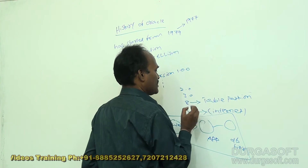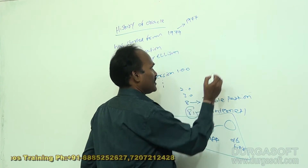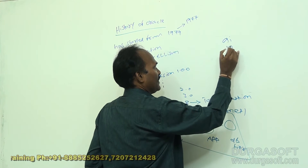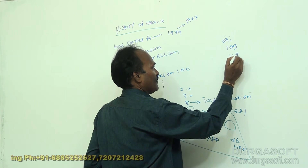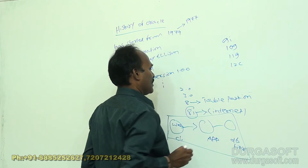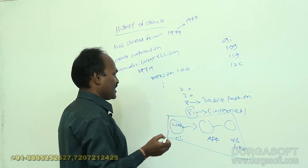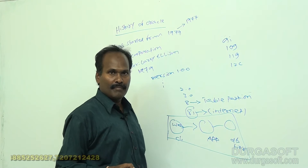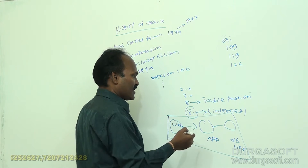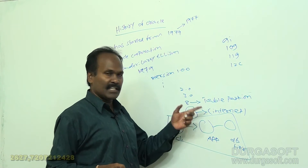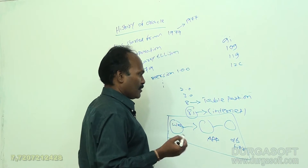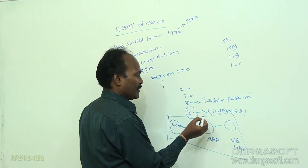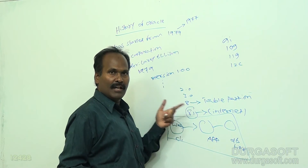After 8i, versions 9i, 10i, 11i, and 12i were introduced. Up to 8i, Oracle had not attracted many people. From 8i onwards, it attracted people because of its internet capabilities and internal features.